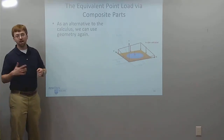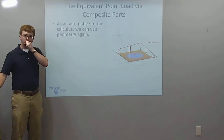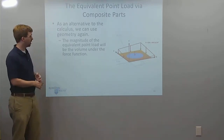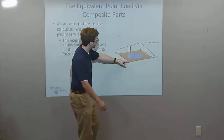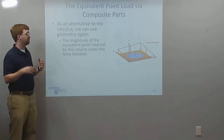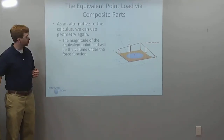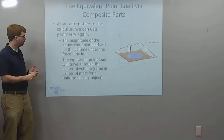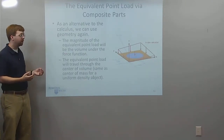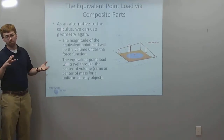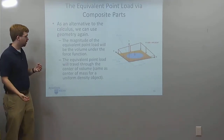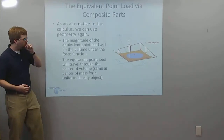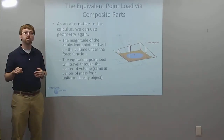As an alternative to all this calculus in 3D, we can use geometry again — composite parts. The magnitude of the equivalent point load will equal the volume under the force function, like a weird box with a slanted top. If I can find that volume, that's my magnitude. The equivalent point load will travel through the center of volume, essentially the center of mass for a uniform-density object, which lets me find both X_EQ and Y_EQ.